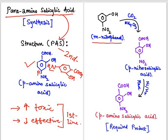Meta-nitrophenol is the starting chemical for the synthesis of para-amino salicylic acid. When meta-nitrophenol is treated with carbon dioxide in the presence of ammonium carbonate, it gives para-nitro salicylic acid. Further, this para-nitro salicylic acid is reduced with the help of a reducing agent — Ni in the presence of hydrogen (Ni/H₂ reduction).